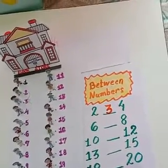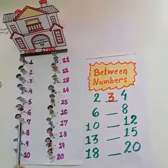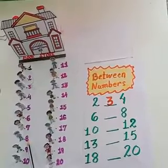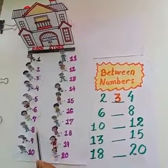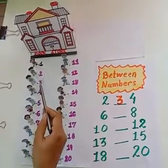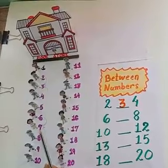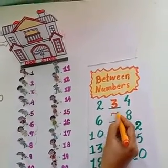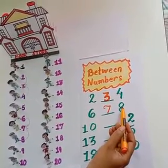Now tell me children, which number child is standing between child number 6 and child number 8? Let's count: 1, 2, 3, 4, 5, 6 and 7. So child number 7 is standing between child number 6 and child number 8.